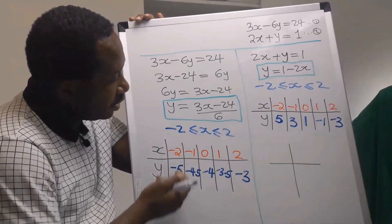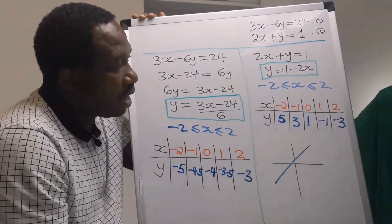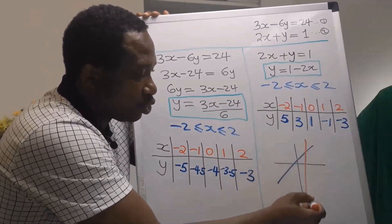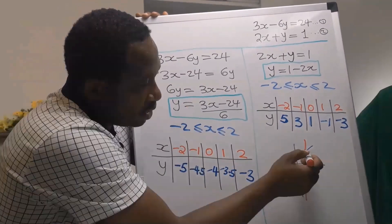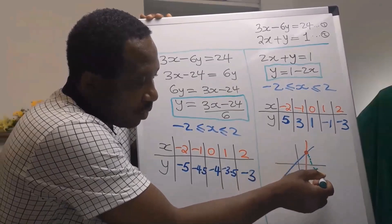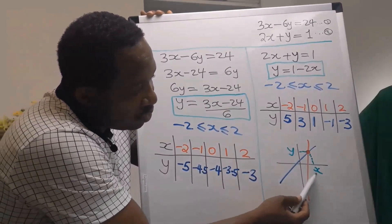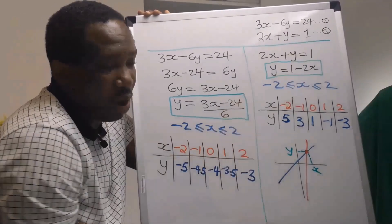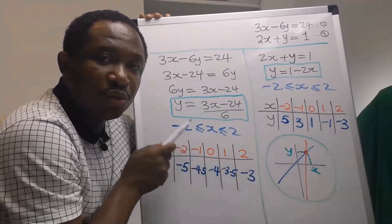Let's assume this is our graph. We plot table one to get one line, and plot equation two to get another line. This is just an example — the actual graph for this problem won't look like this. At the point of intersection, we trace to determine x and y. If you plot correctly, you will get x equals 2 and y equals minus 3.